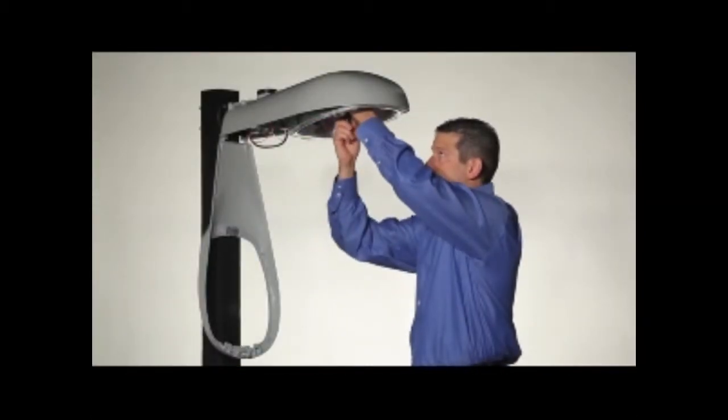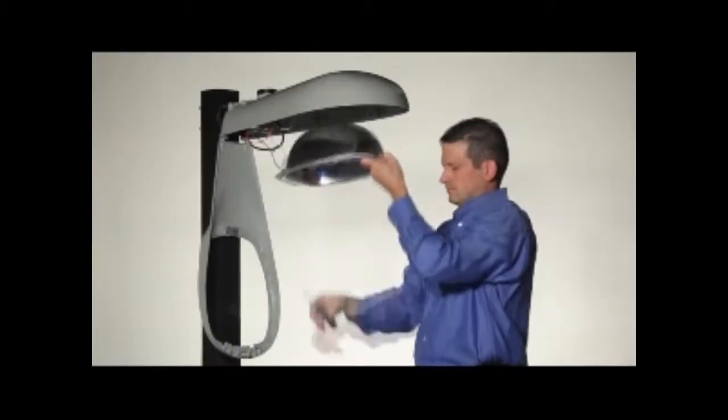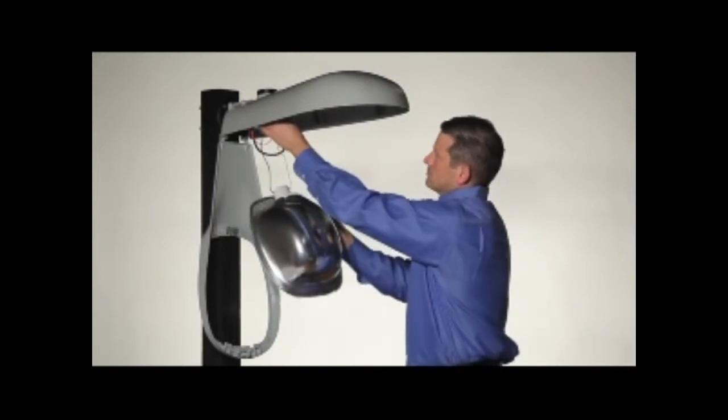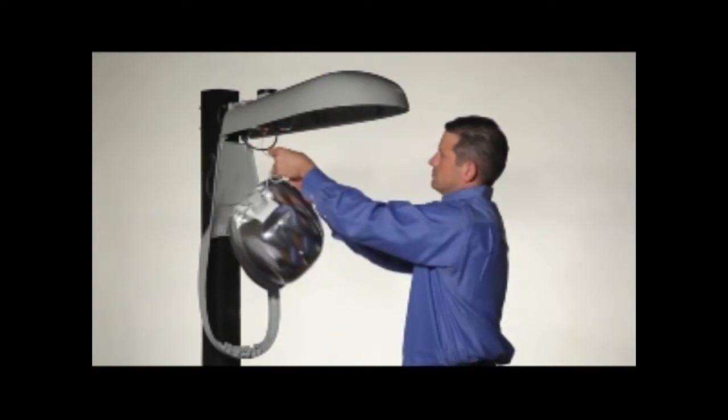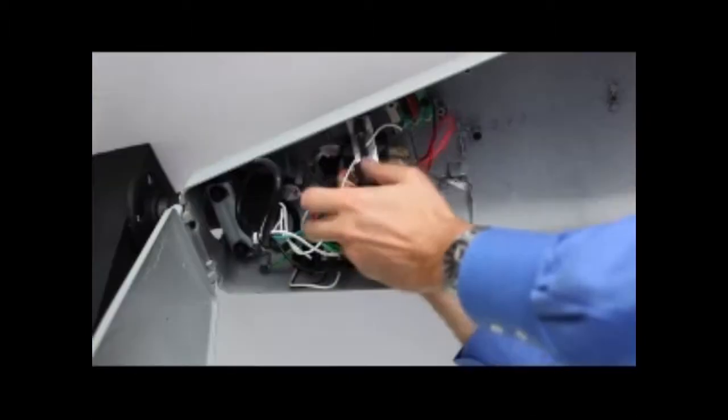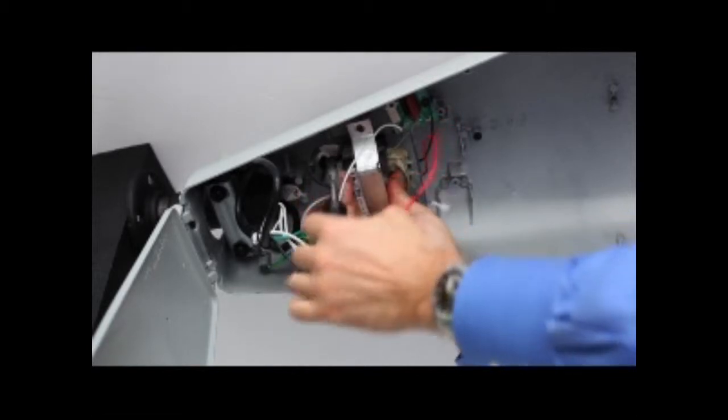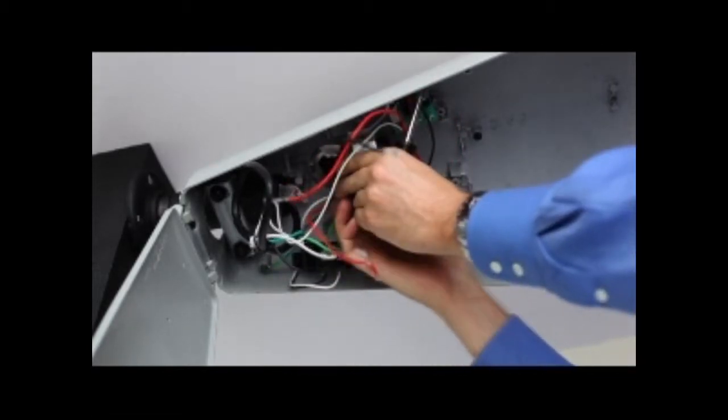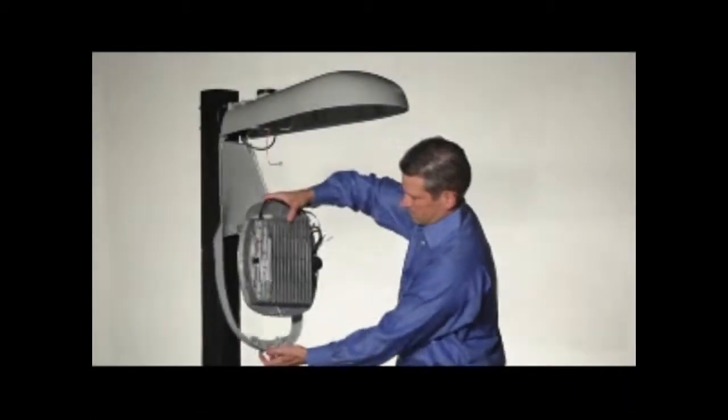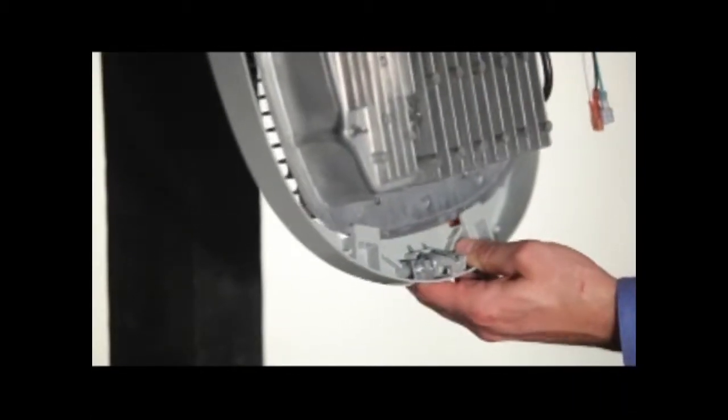Disconnect the wiring to your existing socket. Place the LED light engine in the lower housing of the light.